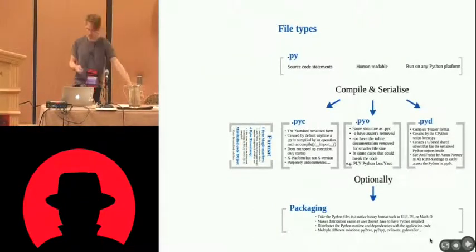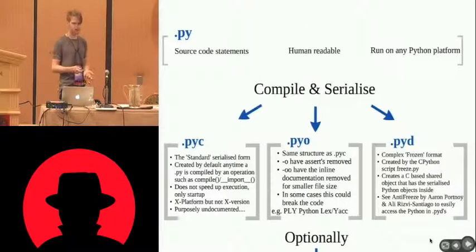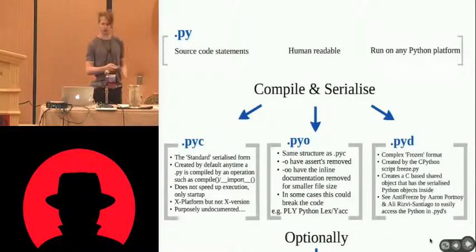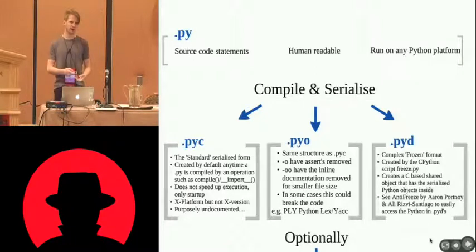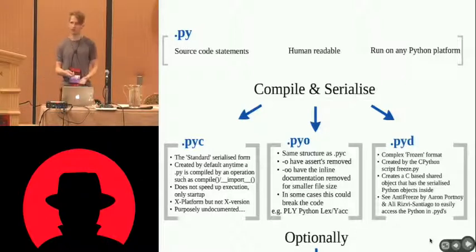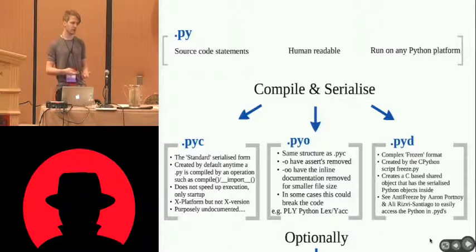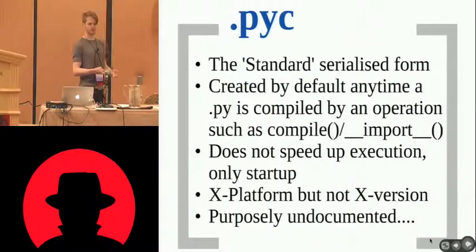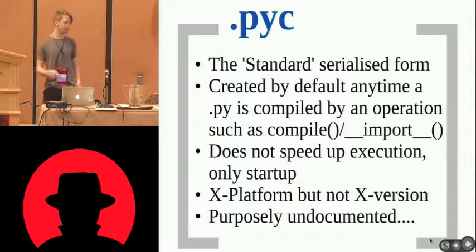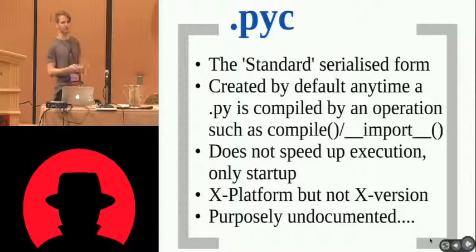There are a few different standard file types with Python. Obviously, the .py, which is where the source code is written — that's human readable. It will run on any Python-supported platform. Lots of open-source products are distributed in the .py format. You can compile this through to a bytecode representation. The standard bytecode representation is PYC. Created by compiling or upon import, which is an implicit compile. It's nothing to do with speed of execution — purely speed-up of instantiation.